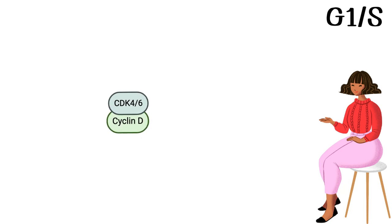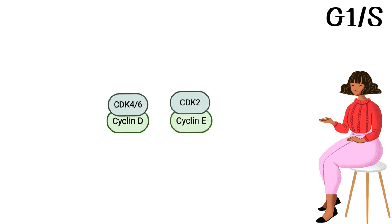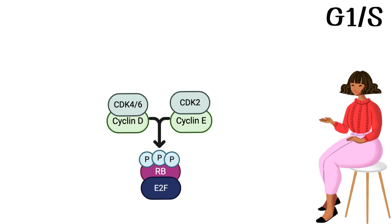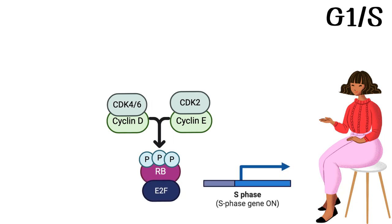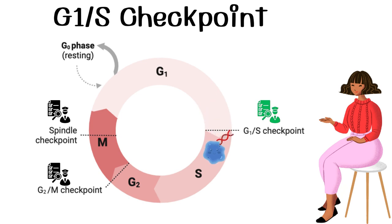Cyclin D binds to CDK4 and CDK6, its cyclin-dependent kinase partners. With the help of cyclin E and CDK2, these two complexes phosphorylate a tumor suppressor protein called retinoblastoma, or RB — meaning attaching a phosphate group. RB is bound to a transcription factor called E2F. However, upon phosphorylation of RB, E2F is released. E2F is responsible for regulating transcription of the S phase genes to progress to the next stage of the cell cycle.